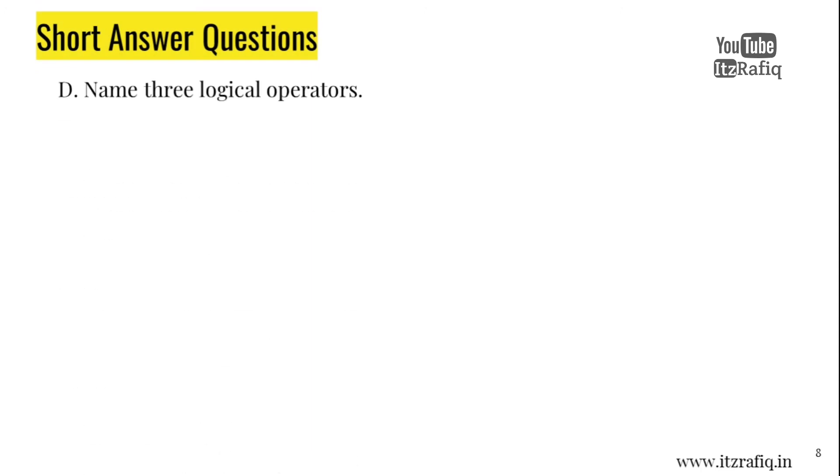D. Name three logical operator. Three logical operator are AND which is denoted by ampersand symbol, OR which is denoted by two pipe symbol, and NOT which is denoted by exclamatory sign.